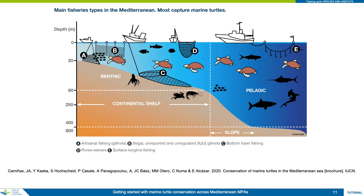Gear types are mainly divided into passive gill nets that trap fish when they swim into them; trawl nets that are actively towed with catch trapped in a bag at the rear end; seines that are similar to gill nets but deployed around a target to catch and hold fish in; and long lines comprising a line of baited hooks that can be set at the surface, mid-water or on the seabed.